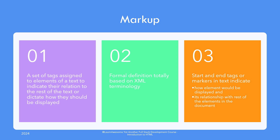Let's go over the higher-level definition and then we will simplify. The Oxford definition of markup is: a set of tags assigned to elements of a text to indicate their relation to the rest of the text or dictate how they should be displayed. This can be confusing at first, except for those familiar with XML, as it borrows heavily from XML terminology — like the XML start and end tags which mark the start and end of an XML element, indicate how the element is to be shown, and its relationship with the rest of the elements.